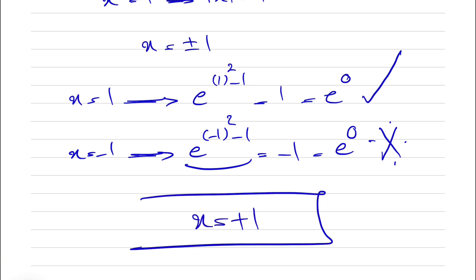Hope everything was clear. The last part is kind of interesting because we get both plus or minus 1, but minus 1 is not acceptable. So that was the main point of this video. Although we could have guessed the answer at the first place by just putting 1 into the question. Hope you guys enjoyed it — let me know if you have another approach to solve this. You guys take care, I'll see you in the next one.